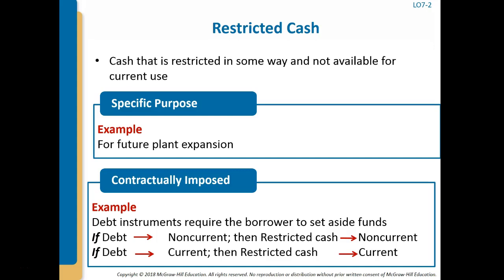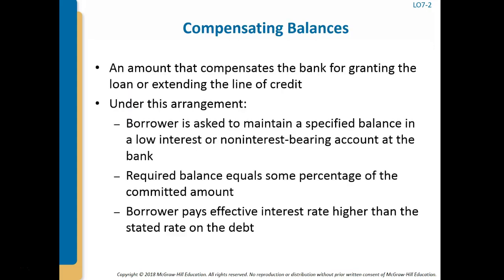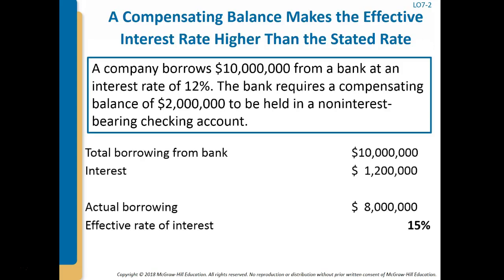Disclosure notes should describe any material restrictions of cash. Banks frequently require cash restrictions in connection with loans, typically requiring the borrower to maintain a specified balance in a low-interest or non-interest-bearing account — usually some percentage of the committed amount, like 2–5%. These are known as compensating balances because they compensate the bank for granting the loan or extending a line of credit. A compensating balance results in the borrower paying an effective interest rate higher than the stated rate.